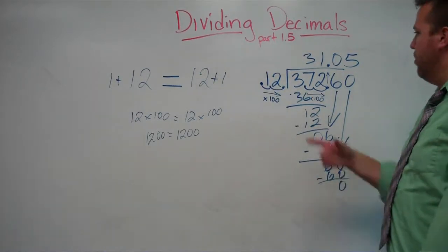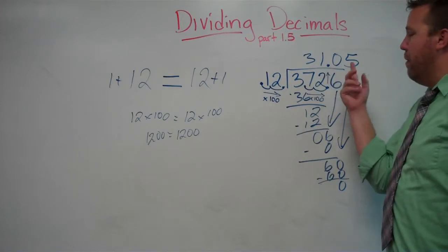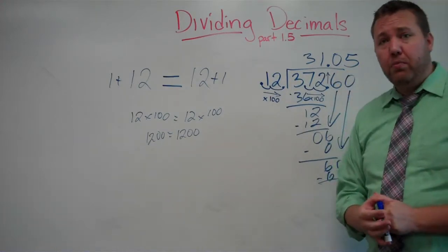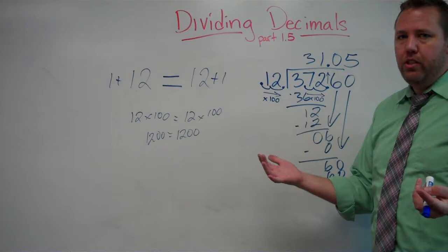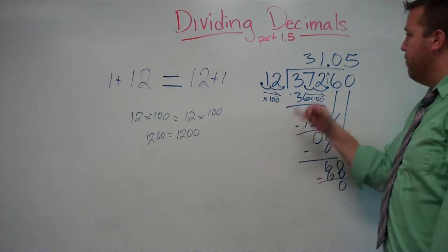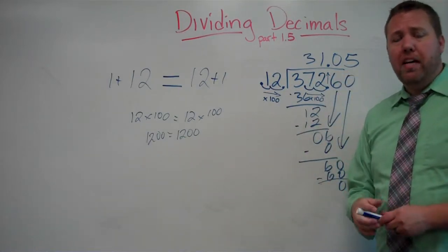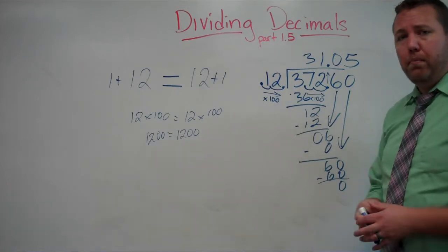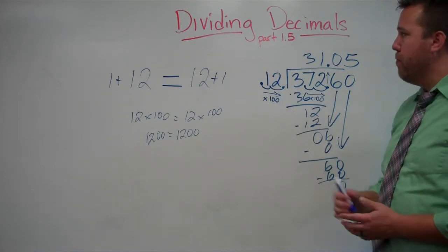With decimals, we're going to keep going. I recommend at least go out two decimal places, depending on what your teacher or instructor requires. But as a general rule, go out about two decimal places and then round up or down as necessary.